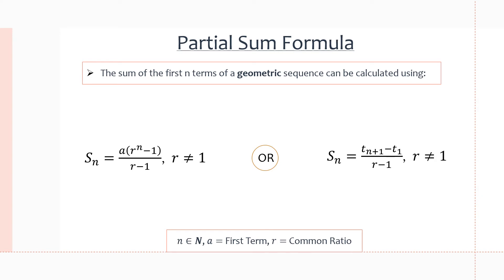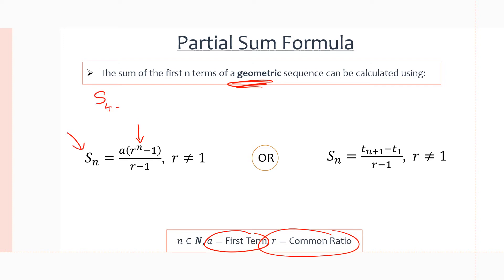Here are the two formulas to calculate the first n terms for a geometric sequence. The first one is: S(n) = a × (r^n − 1) / (r − 1), where a is the first term, r is the common ratio, and n is the number of terms. We have a restriction: r cannot equal 1, because that would give us a zero in the denominator, making the equation undefined.